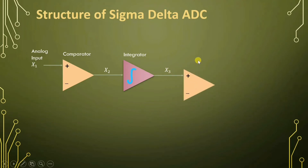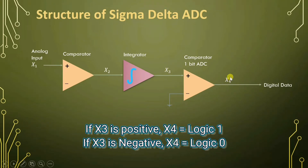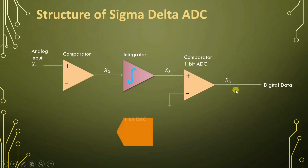X3 is given to a one-bit analog to digital converter, where X3 is compared with 0. If X3 is positive, X4 will be logic 1. If X3 is negative, then X4 will be logic 0 — this is what the one-bit analog to digital converter does. So if X3 is positive, X4 will be digital data 1, and if X3 is negative, X4 will be logic 0. This output is taken with feedback.